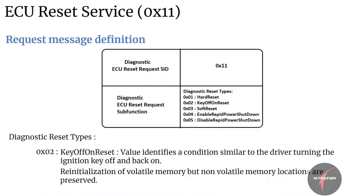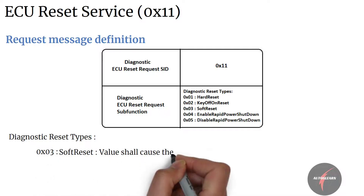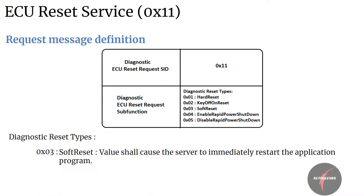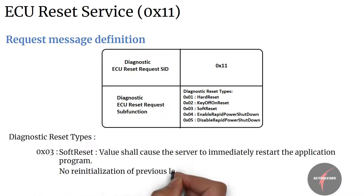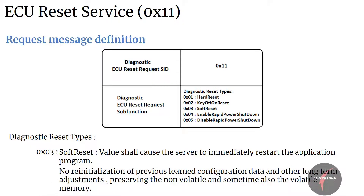The key off/on reset condition should simulate a key off/on sequence. Typically this operation shall lead to reinitialization of volatile memory locations, whereas non-volatile memory locations are preserved. Next, value three maps to soft reset. This value shall cause the server to immediately restart the application program.